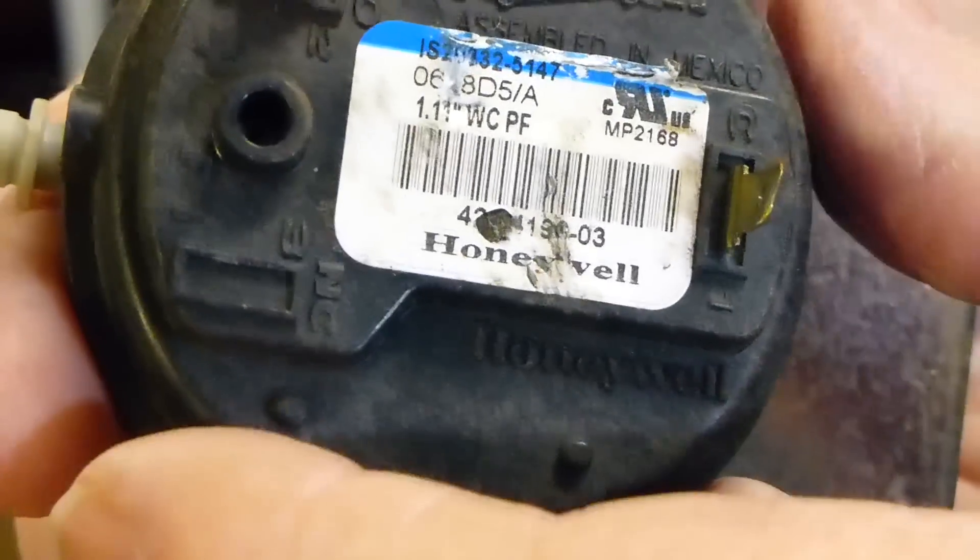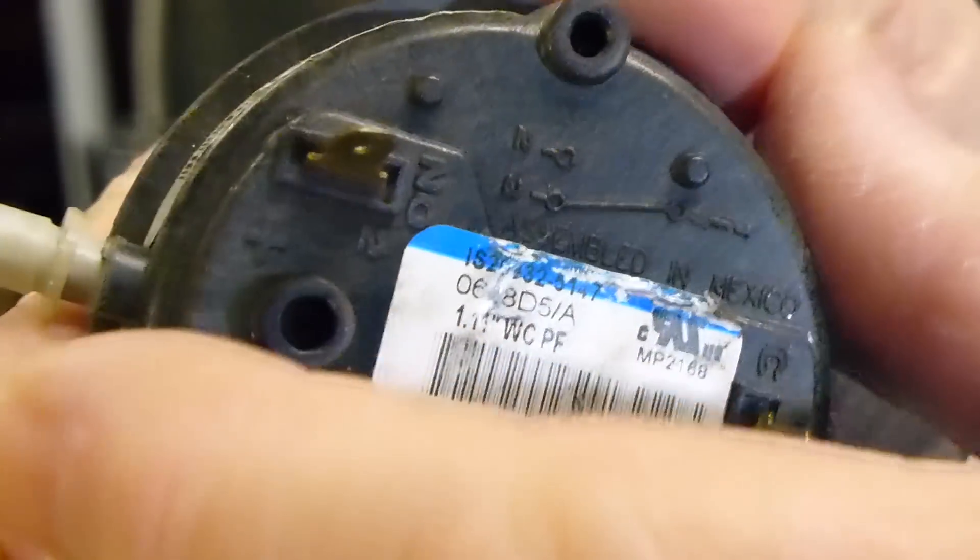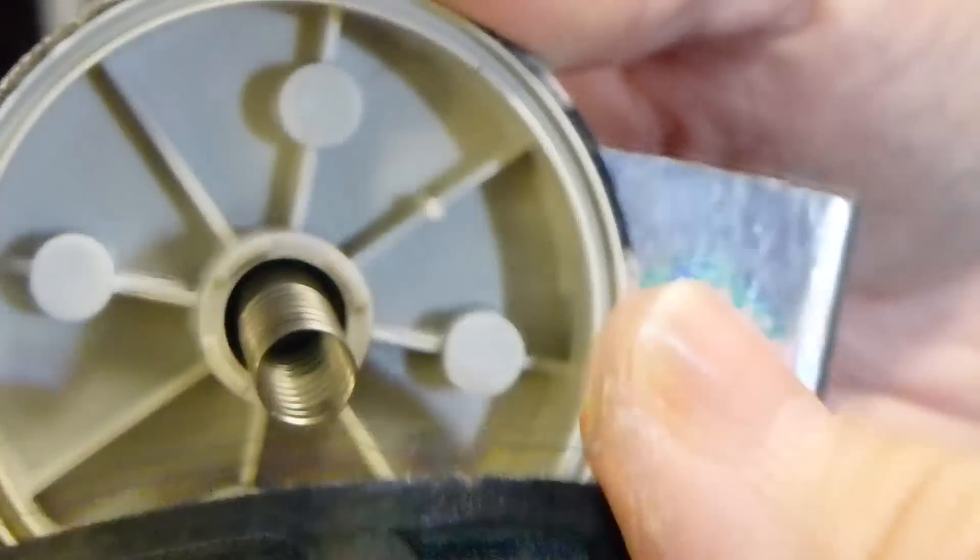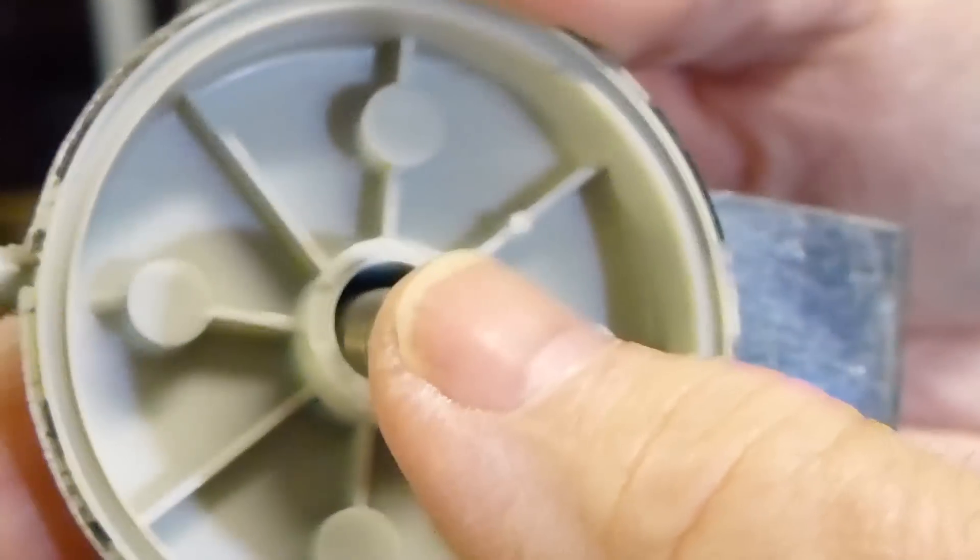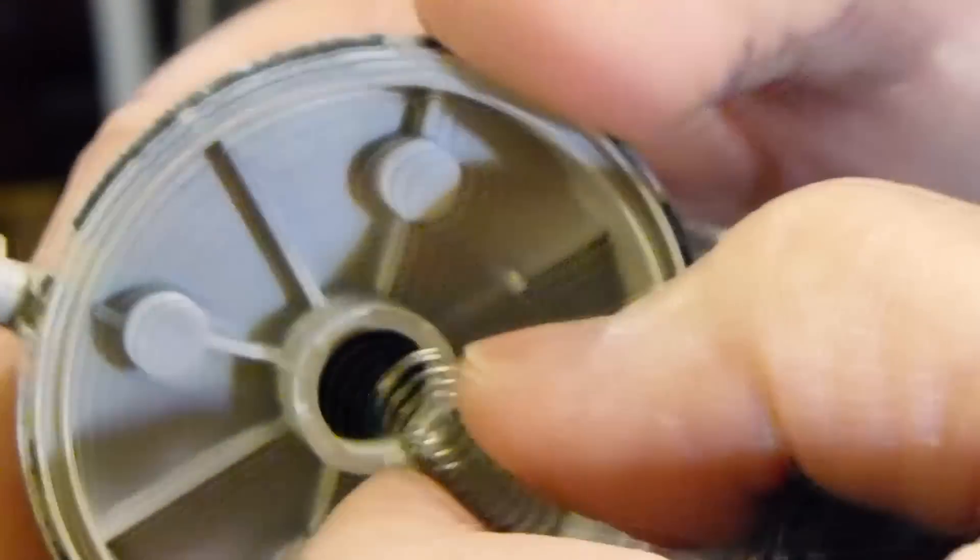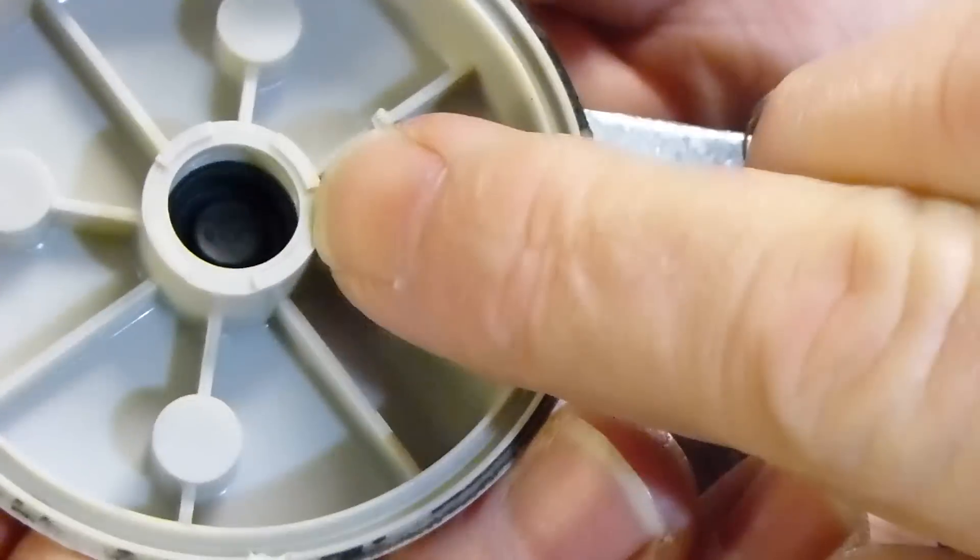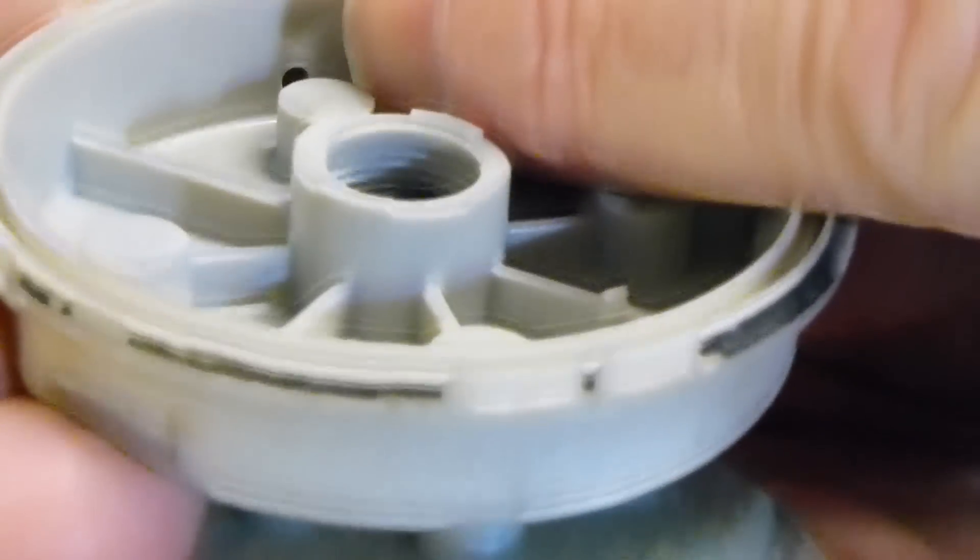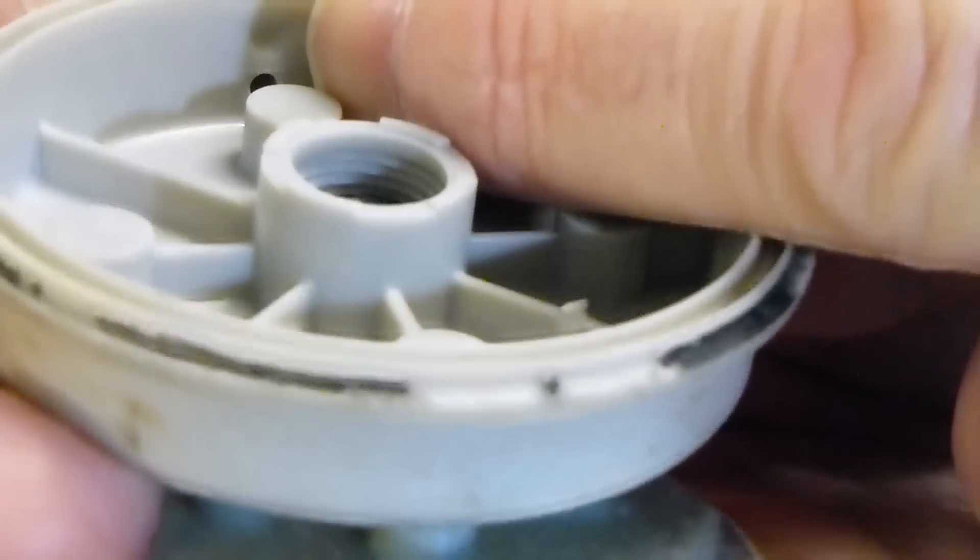So I'm going to go ahead and open this up and show you the inside of this particular pressure switch. You can see that it comes with a spring, and on the other side of the spring, of course, is where the adjustment screw is. And you can see this is where the tubing actually connects on the other side.